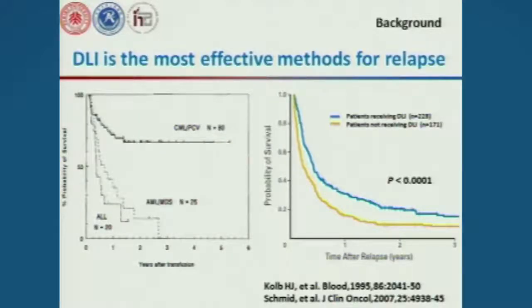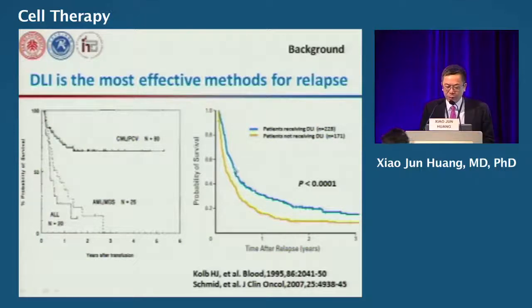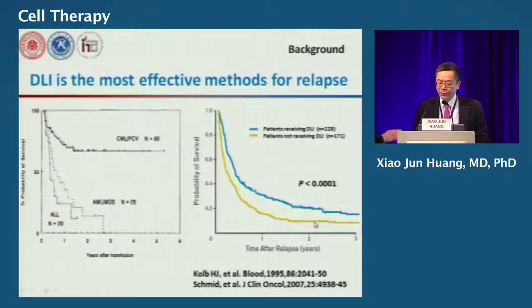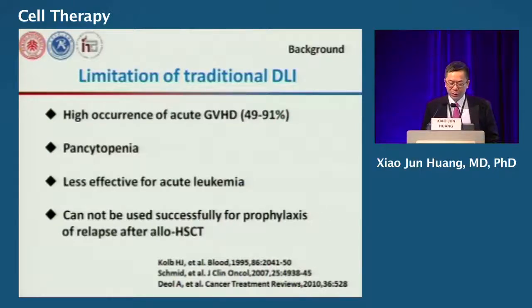As we all know, relapse remains the main cause of patient death after transplantation. Donor lymphocyte infusion is still the most effective therapy for relapse, but long-term disease-free survival is still poor. Traditional donor lymphocyte infusion is limited by the high occurrence of acute GVHD and pancytopenia, and it is less effective for acute leukemia, so it cannot be used easily for the prophylaxis of relapse after allogenic transplantation.